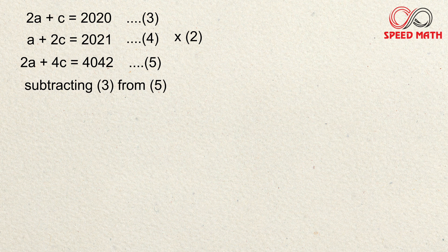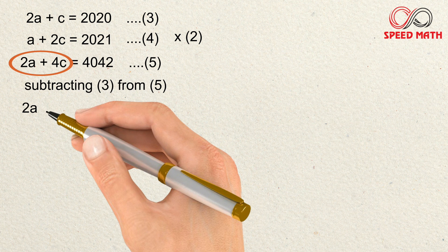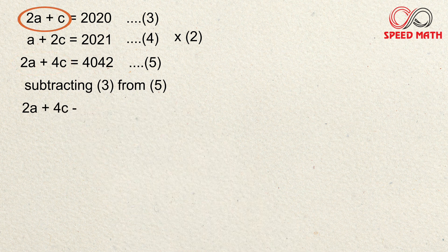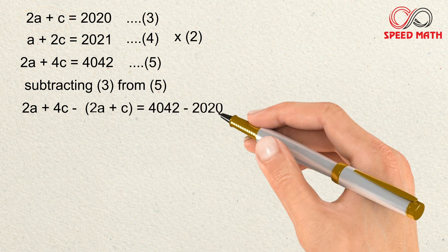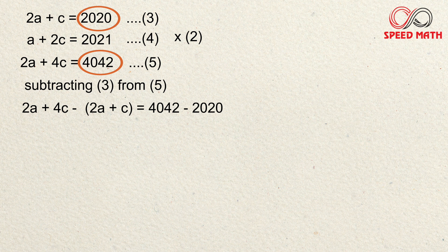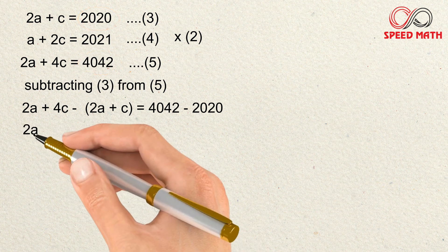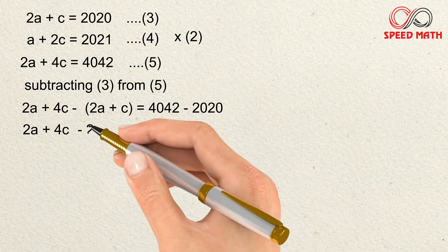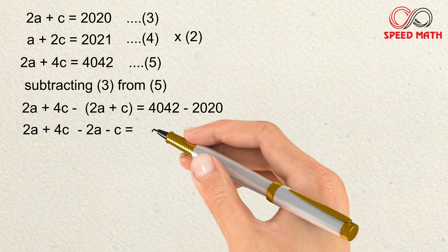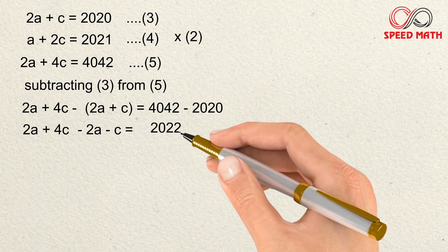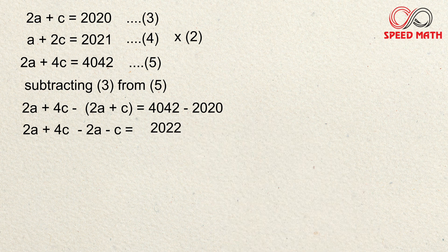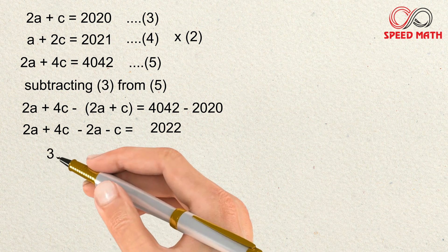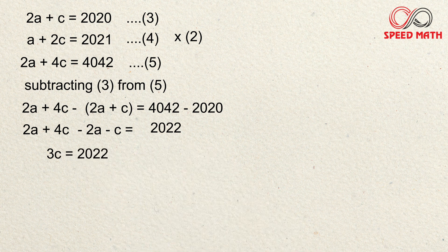Now we subtract equation 3 from equation 5. Writing equation 5 first: (2a + 4c) − (2a + c) = 4042 − 2020. Opening the bracket and changing signs: 2a + 4c − 2a − c = 2022. The 2a terms cancel, and 4c − c gives 3c.